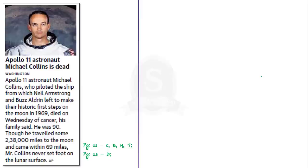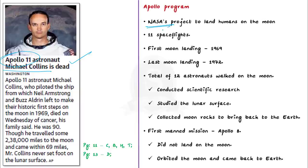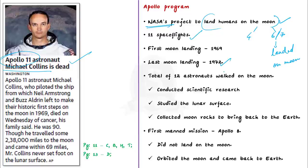The next discussion is based on a news article about the death of astronaut Michael Collins, an Apollo 11 astronaut who piloted the spaceship from which Neil Armstrong and Buzz Aldrin made their first steps on the moon in 1969. The Apollo program was NASA's project in the 1960s and early 1970s to land humans on the moon. It consisted of 11 total space flights — the first four tested equipment, and six of the remaining seven landed on the moon. The first moon landing was in 1969 and the last in 1972, with a total of 12 astronauts walking on the moon and conducting scientific research.